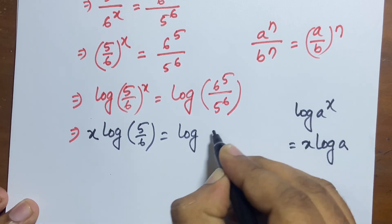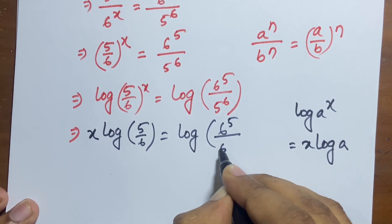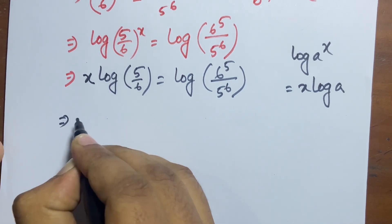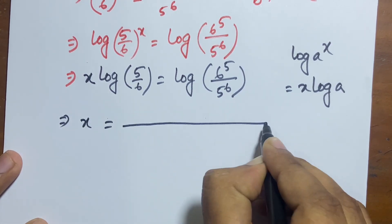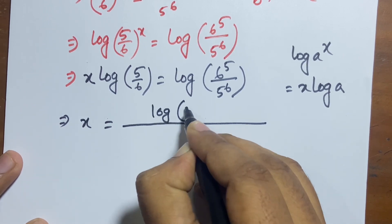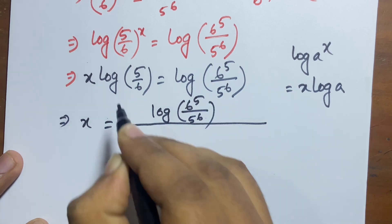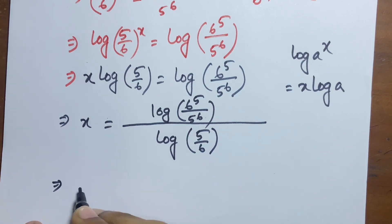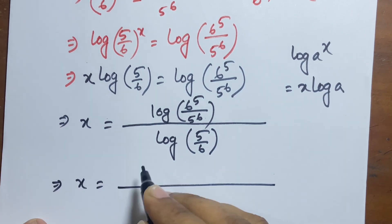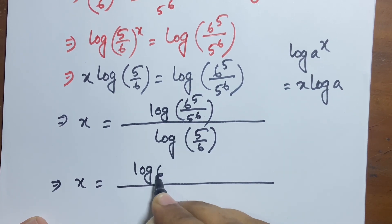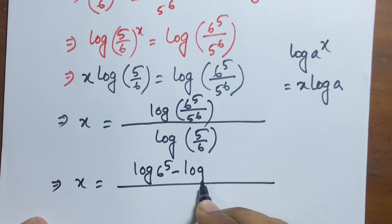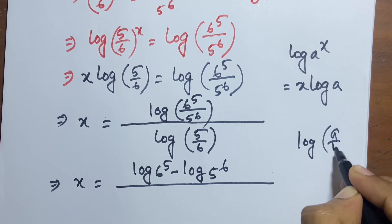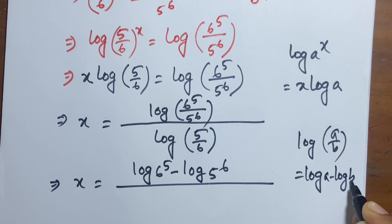Now x = log(6^5 / 5^6) / log(5/6). We apply the rule log(a/b) = log a − log b. So the numerator becomes log(6^5) − log(5^6), which gives 5·log 6 − 6·log 5.